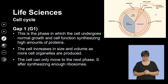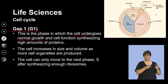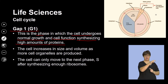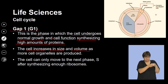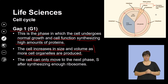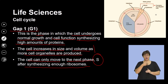The G1 or Gap phase is the phase in which the cell undergoes normal growth and cell functioning, synthesizing all the proteins that are needed. The cell increases in size and volume as more cell organelles are produced. After cells divide, the cell produces more organelles and becomes much more complex.